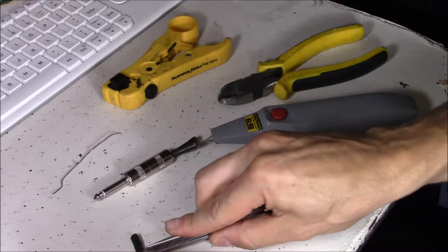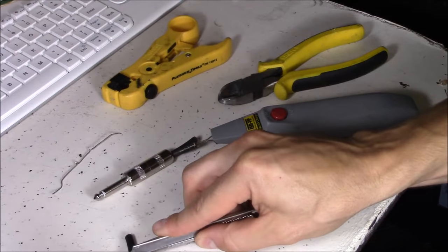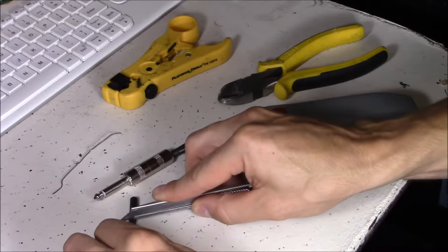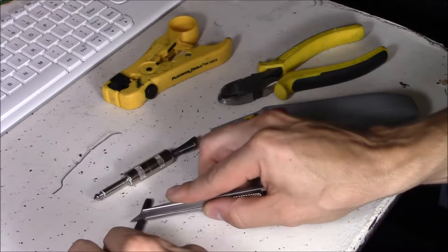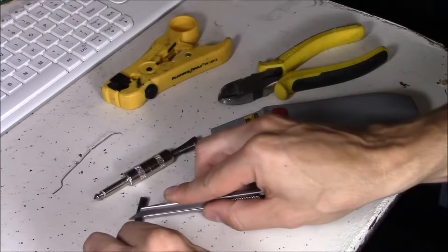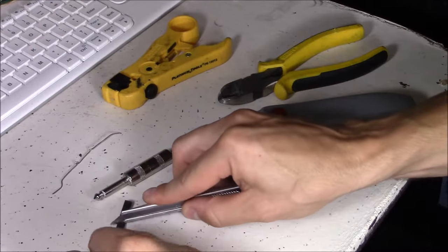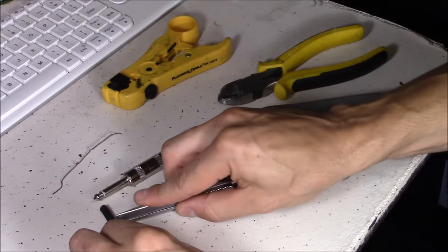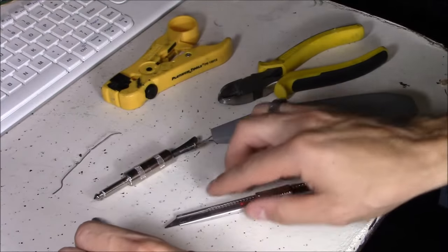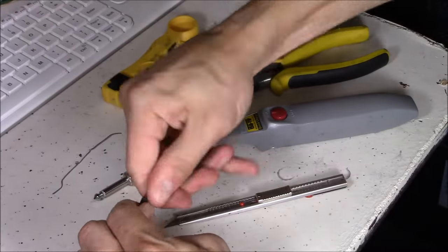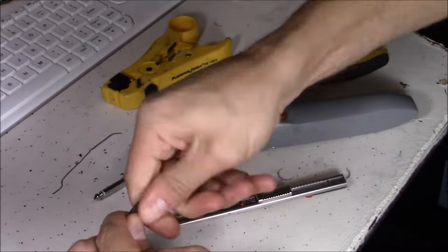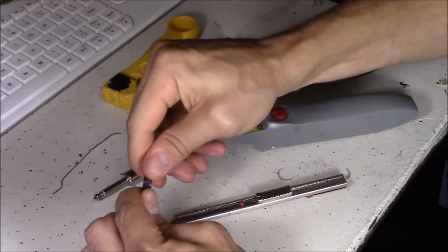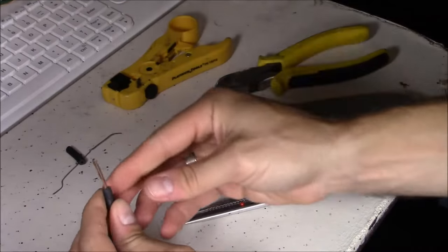So let's go ahead and splice that. You just want to score the sides. Don't cut all the way through because you're going to cut the thin wires inside. You just want to rotate it and press down slightly. You want to cut that outside sleeve off and then you twist it like that back and forth and it should come out like that.